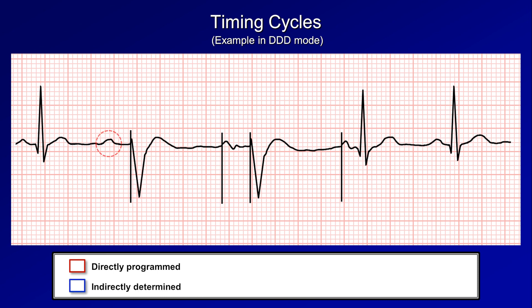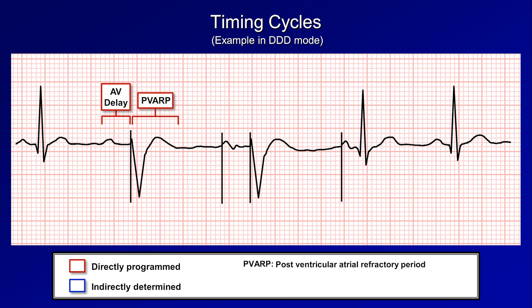Starting with this intrinsic natural P wave that is sensed by the pacemaker. The pacemaker then waits for the length of the programmed AV delay to see if intrinsic AV conduction occurs. In this case intrinsic conduction did not occur, so a ventricular pacing spike is delivered. After the pacing spike, the PVARP begins, extending some time into the T wave. Together, the AV delay and PVARP are known as the total atrial refractory period.